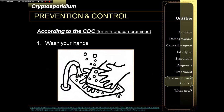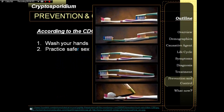According to the CDC, to prevent cryptosporidiosis, wash your hands properly with soap and water — sing happy birthday twice for the appropriate duration. Practice safer sex, meaning avoid anal-oral sex, as this is a fecal-oral transmission parasite. Always clean up before engaging in sexual activity.